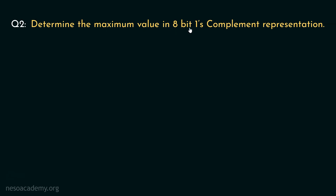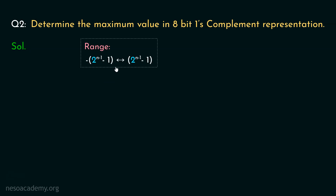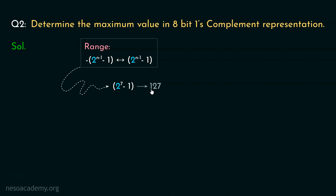Determine the maximum value in 8-bit one's complement representation. With n bits, the range in one's complement is from minus 2^(n−1) − 1 to 2^(n−1) − 1. Since we need the maximum value, we use 2^(n−1) − 1. With n = 8, this becomes 2^7 − 1. Since 2^7 = 128, we get 128 − 1 = 127. So 127 is the maximum value representable using 8 bits in one's complement representation.